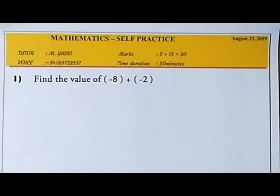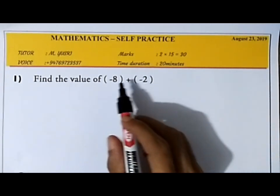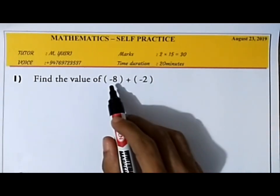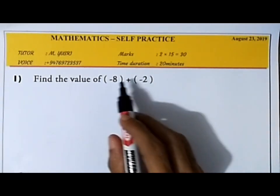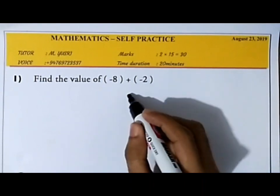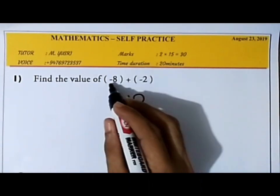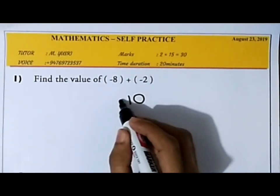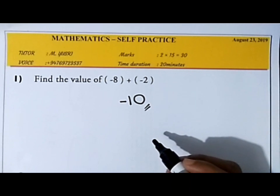How to solve: find the value of (-8) + (-2). Here both signs are the same. If both signs are the same, we just add them: 8 plus 2 equals 10, and we give it the minus sign. So the direct answer is minus 10.